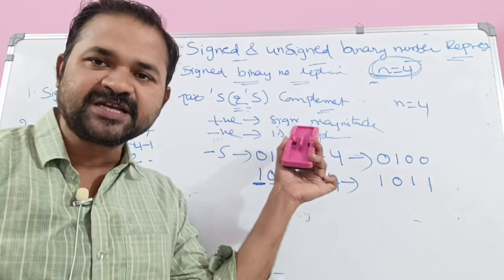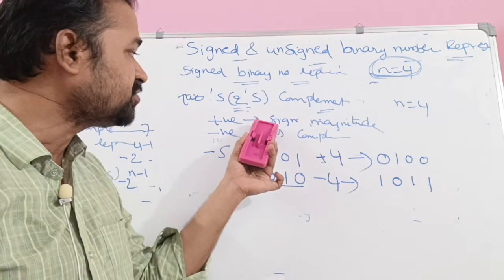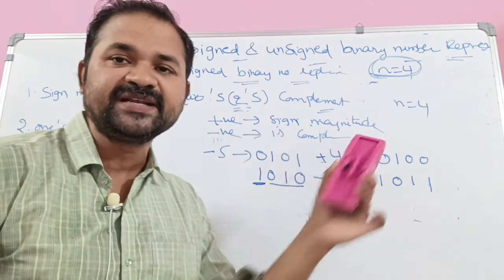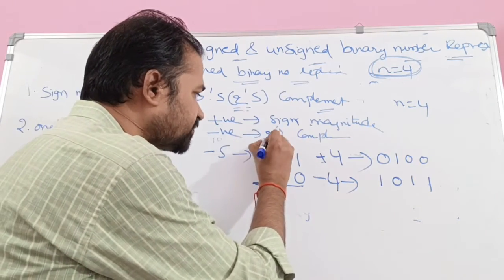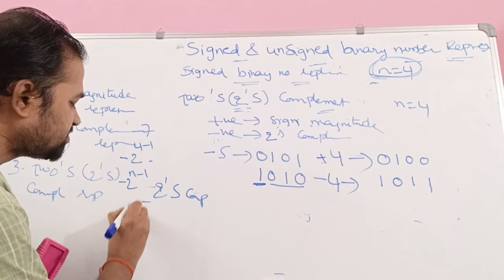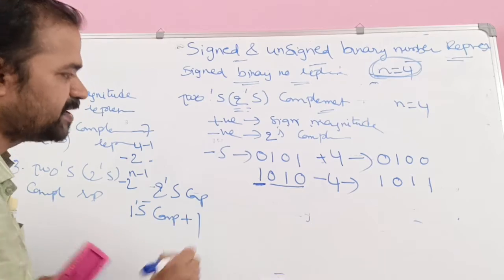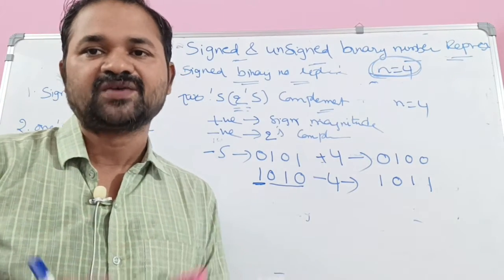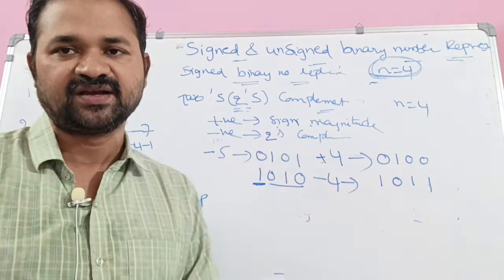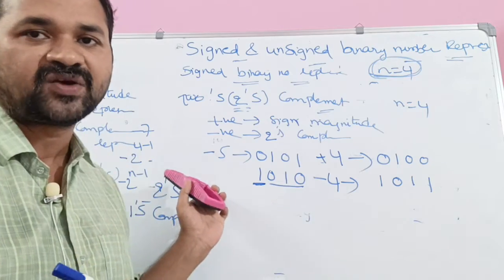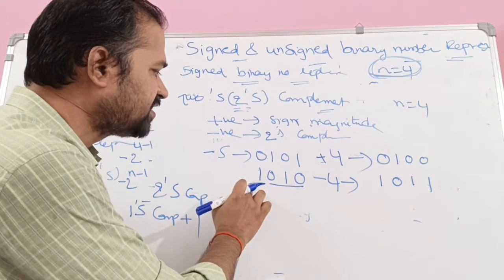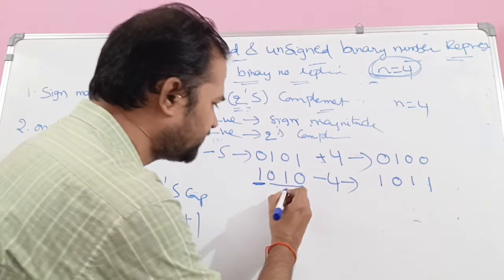Now let us see the third representation: two's complement notation. Here also we can represent positive and negative numbers. Positive numbers use sign magnitude notation, while negative numbers use two's complement notation. The formula for two's complement is: one's complement plus 1. Let us represent −5. First, represent +5 as 0101. Then calculate one's complement: 0→1, 1→0, 0→1, 1→0, giving 1010.